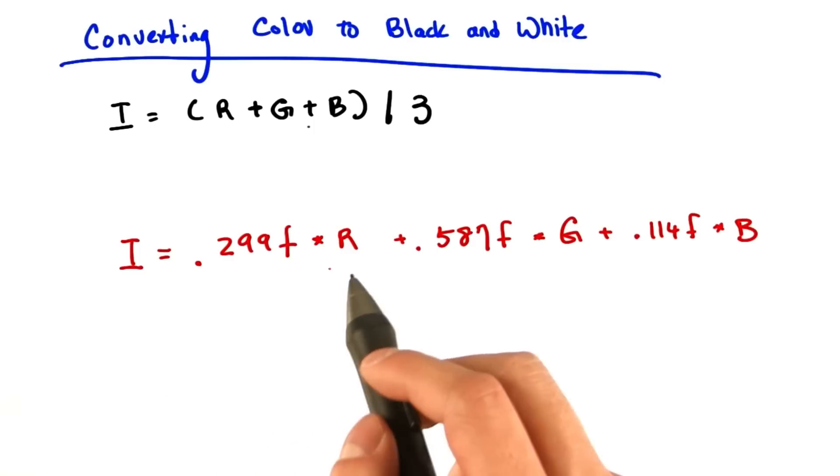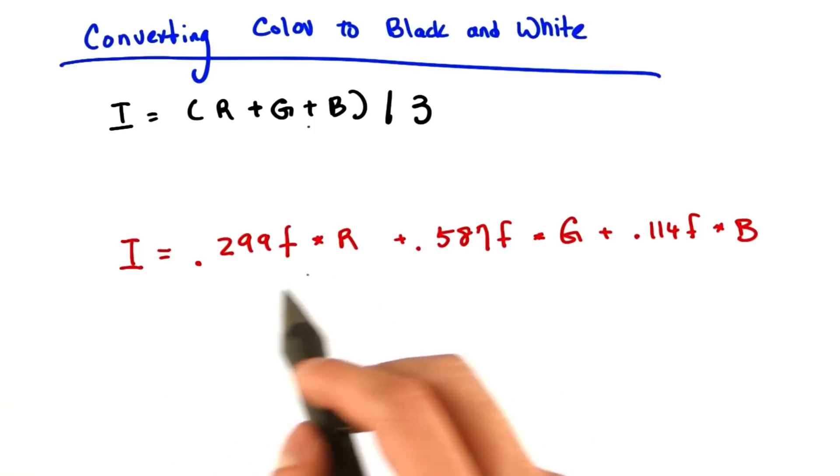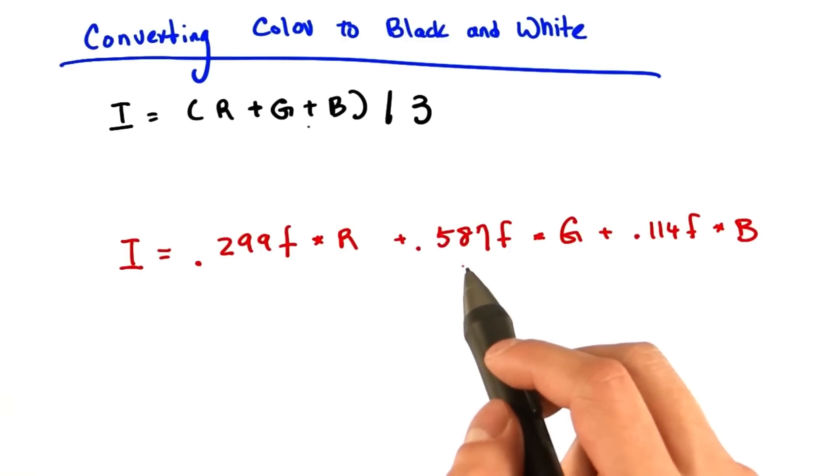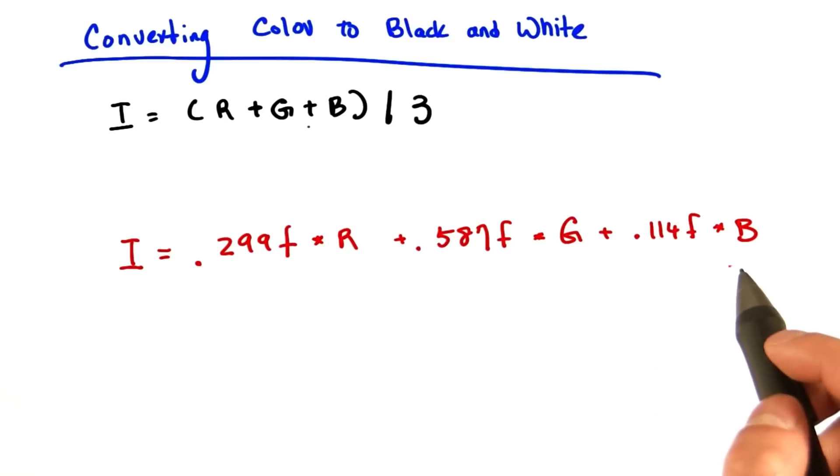We are going to multiply the color channel red by 0.299, multiply the color channel green by 0.587, and multiply the color channel blue by 0.114.